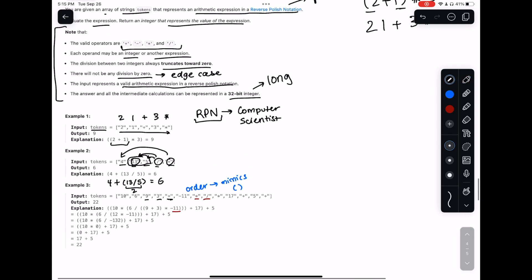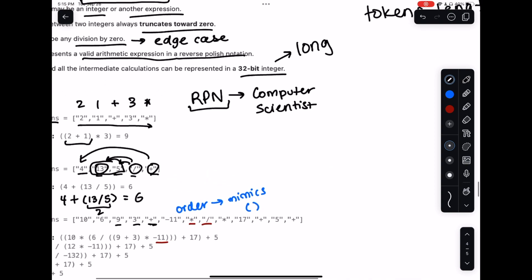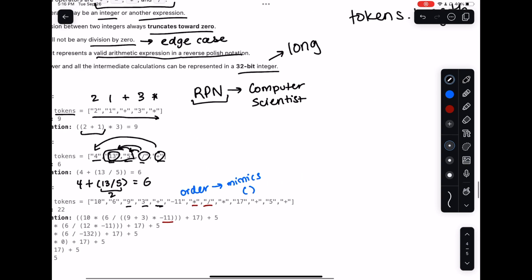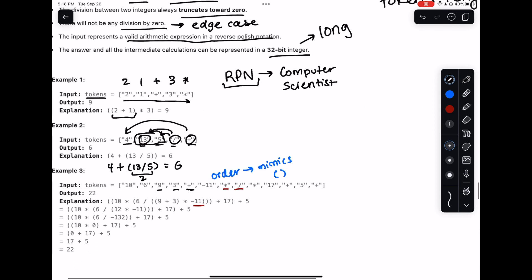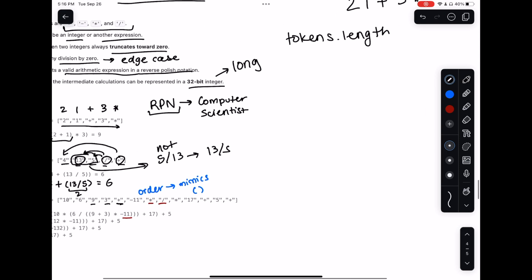Now we understand the problem - let's think about our approach. We need to go through every element in the tokens array. The key insight is that whatever value we have, we need to process it in the specific order. Since order matters - thirteen over five, not five over thirteen - we need a data structure that handles order, so we could think about a queue or a stack. A stack is last in, first out, like a stack of cards.